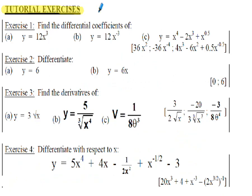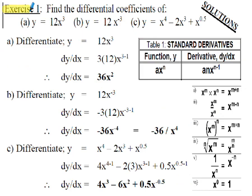Here are some tutorial exercises related to differentiation. Exercises 1 to 4 all involve standard form ax^n polynomials, so only that one derivative rule is needed. These exercises become progressively more complicated as they require more use of indices to convert expressions into standard form. If you want to attempt the exercises before reviewing the solutions, please stop the presentation now. Answers are shown in brackets on the right-hand side of each exercise.